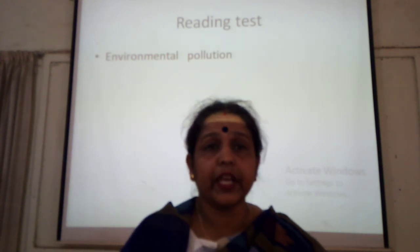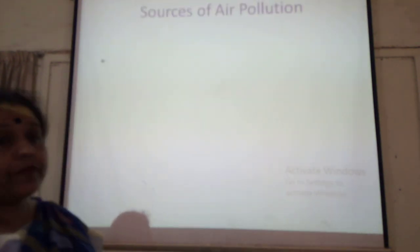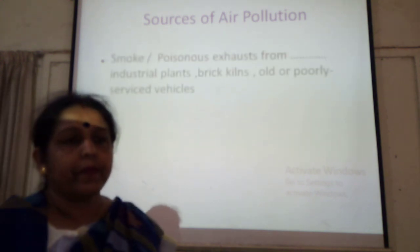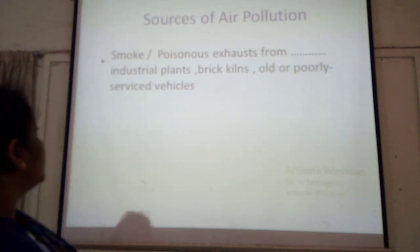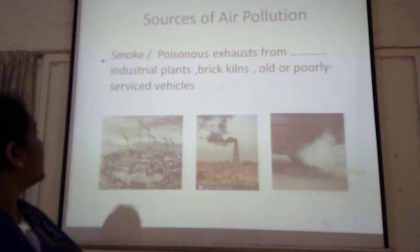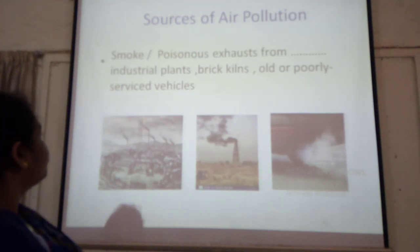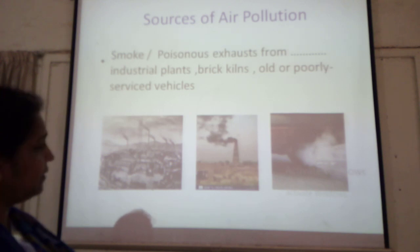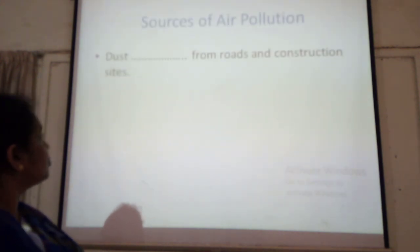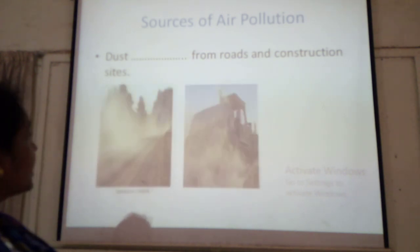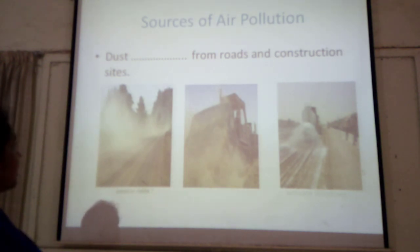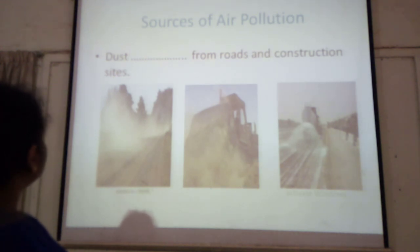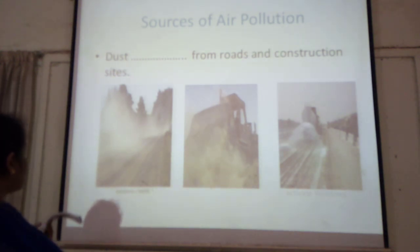Can you tell me the reasons of air pollution? Yes, you are right. Smoke or exhaust — we have already seen the image of exhaust. Poisonous exhaust comes from industrial plants, from brick kilns, or old or poorly serviced vehicles. Then dust — dust is also responsible for air pollution, and dust comes from roads and construction sites. When we come through roads, we very often experience dust.